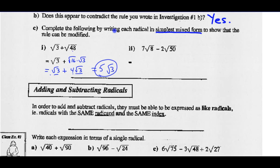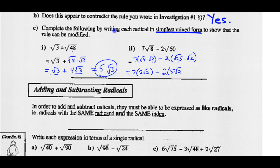Let's do the same thing for part 2: 7 radical 8. I can rewrite 8 as 4 times 2, so that's 7 times radical 4 times radical 2. Minus 2 times radical 50 — that's the same as radical 25 times radical 2. Now let's simplify: 7 times the square root of 4 is 2, there is no square root of 2. Minus 2 times the square root of 25 is 5, but there is no square root of 2. So 7 times 2 is 14 radical 2, and negative 2 times 5 is minus 10 radical 2. Now they're like radicals: 14 minus 10 is 4 radical 2.